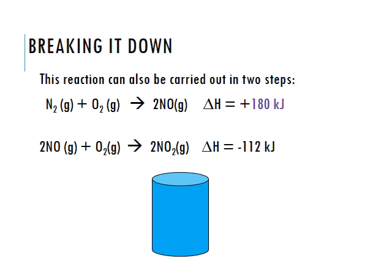We can also break that reaction down into separate steps. In step one, nitrogen and one oxygen combine to form two nitrogen monoxide molecules, with a delta H of positive 180 kilojoules — it takes 180 kJ to break apart nitrogen and oxygen and form nitrogen monoxide. In step two, that nitrogen monoxide adds to another oxygen molecule to make two nitrogen dioxide molecules, with delta H of negative 112 kilojoules. So 180 kJ goes in during the first step and 112 kJ goes out in the second step.